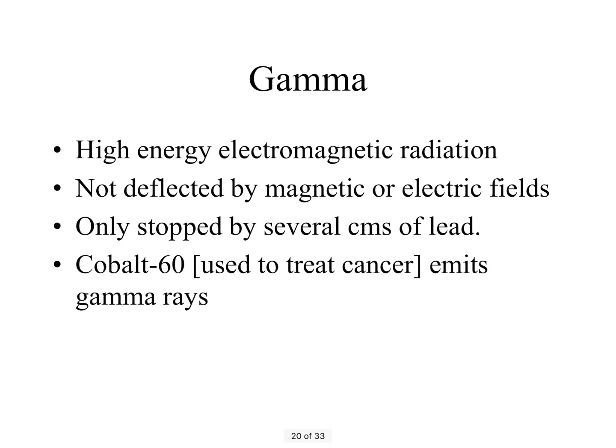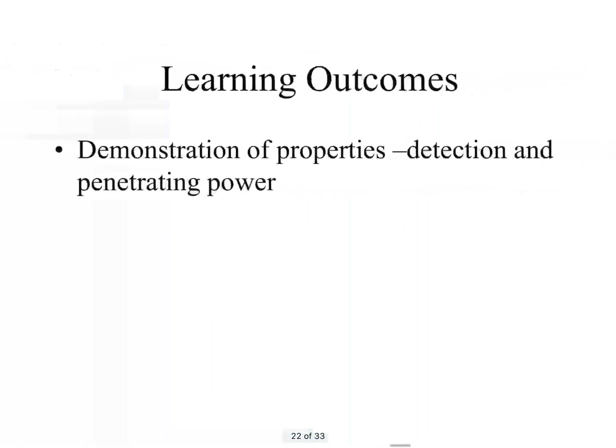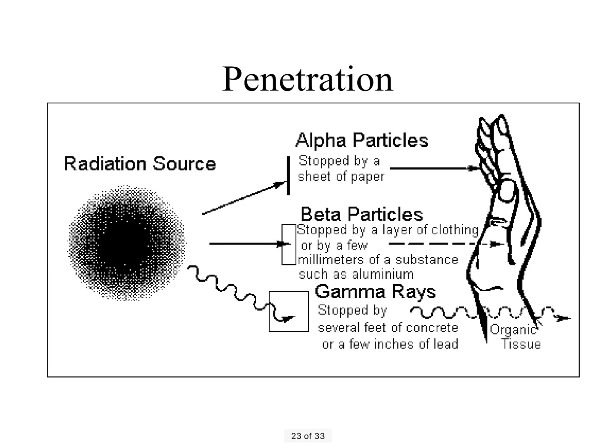Gamma radiation is the last type — it's high-energy electromagnetic radiation, not a particle. It has no mass and no charge, so it's not deflected by an electric or magnetic field. It's very dangerous, penetrating through your skin and causing mutations in the nucleus, so you need several centimetres of lead to stop it. Cobalt-60 emits gamma and is used to treat cancer, sterilize medical equipment, and preserve some foodstuffs. In order of increasing penetration: alpha, beta, gamma; decreasing: gamma, beta, alpha.